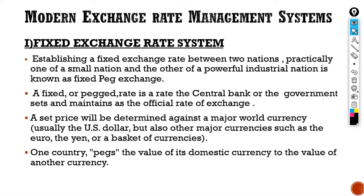Let's take an example of India and the US. Under the fixed exchange rate system, if India's rate is pegged with the US and the central government fixes the rate as one dollar equal to 65 rupees, then no matter what the market situation is, the rate will remain fixed.